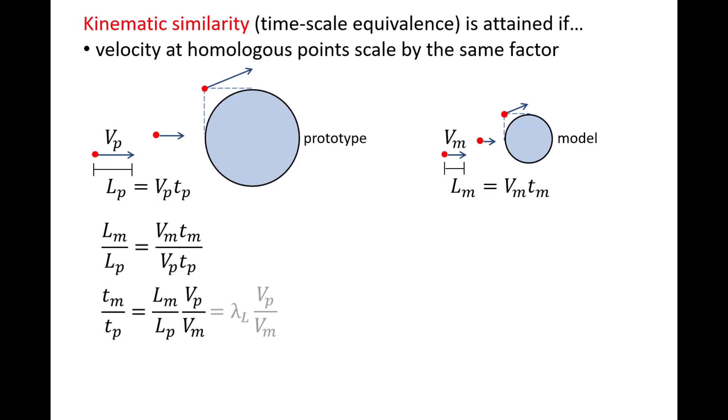Rearranging this equation, tm over tp equals lm over lp multiplied by vp over vm. lm over lp is the length ratio of the model to the prototype, which we call lambda l — a constant if we have geometric similarity. vp over vm is the velocity ratio of the prototype to the model, which is also constant throughout the flow if we have kinematic similarity. This means tm over tp is also constant throughout the flow, leading to an interesting conclusion: when conducting a modeling study, time is scaled up or scaled down compared to the prototype.